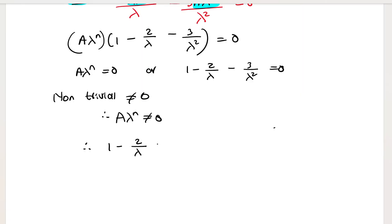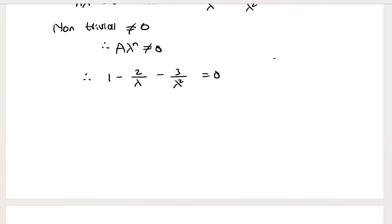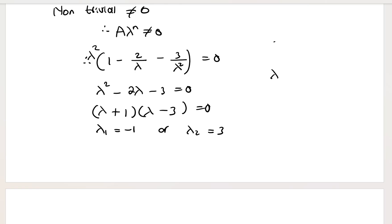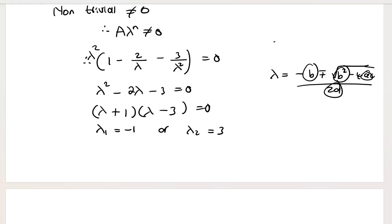Multiplying all terms by λ² gives λ² minus 2λ minus 3 equals zero. To factorize: the factors of 3 are 3 and 1, with opposite signs, giving (λ + 1)(λ - 3) = 0. This means λ₁ equals negative 1 or λ₂ equals 3.